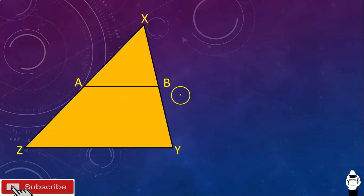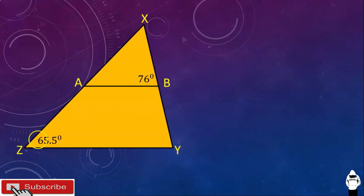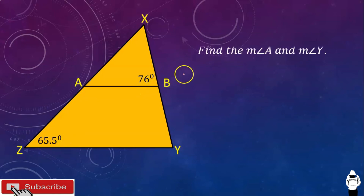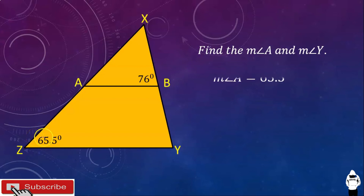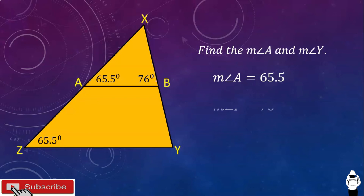Let's have another example: triangle XYZ with midline AB. If angle Z is 65.5 degrees and angle B is 76 degrees, find the measurement of angle A and the measurement of angle Y. Angle A and angle Z are corresponding angles and they are congruent, so the measurement of angle A is 65.5 degrees. Angle Y and angle B are also corresponding angles and they are congruent, so the measurement of angle Y is 76 degrees.